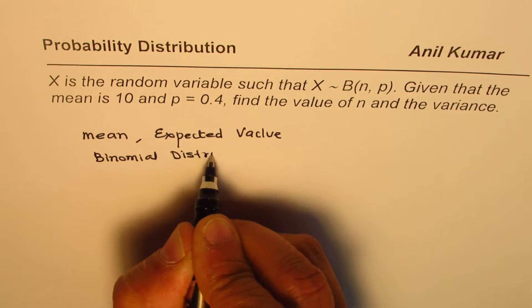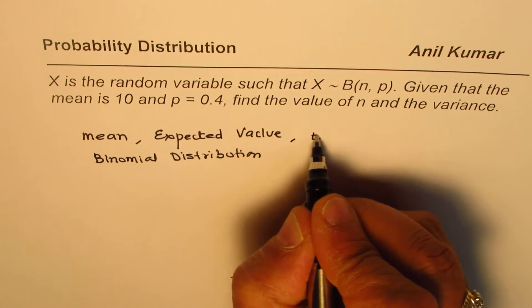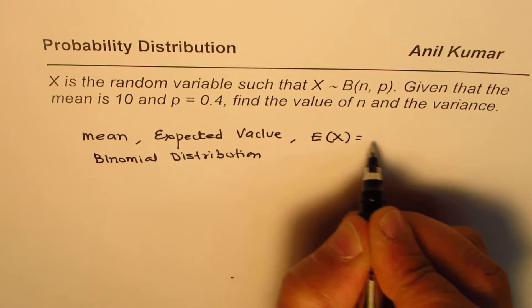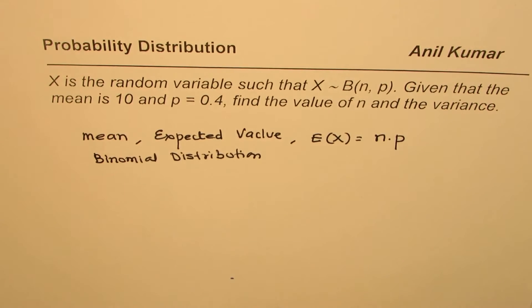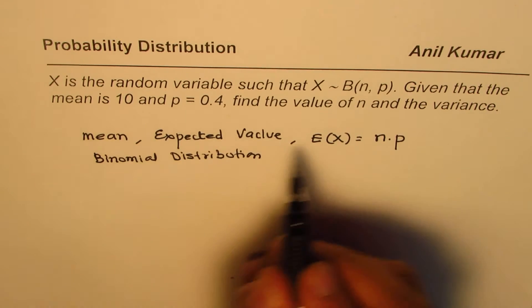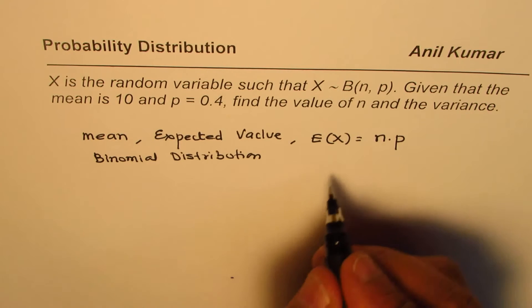E(X) equals n times p. Now, here we are given the mean, that means we are given the expected value. The mean is the expected value, which is 10.